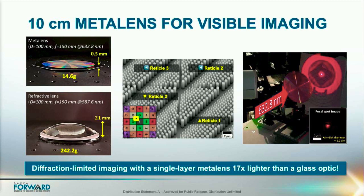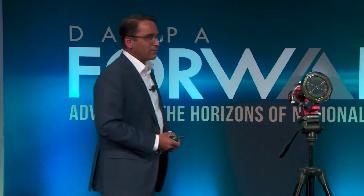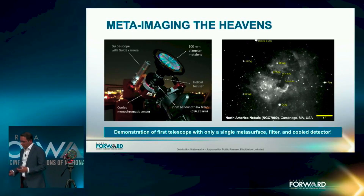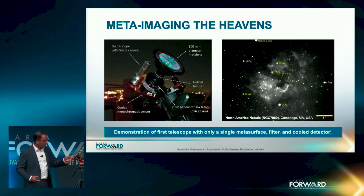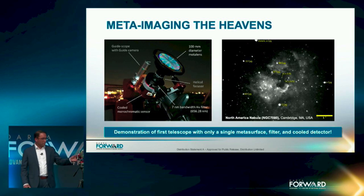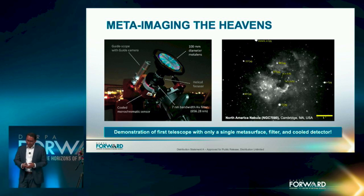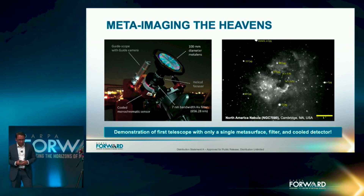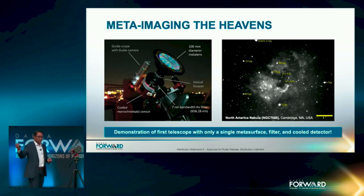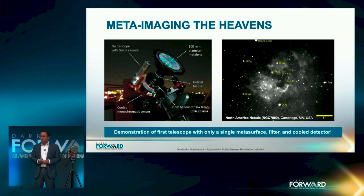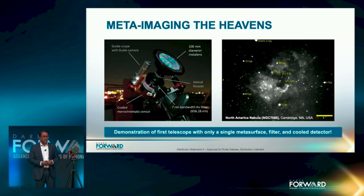The team took the next step and integrated this into the first meta-optic telescope. This telescope, as you see in front of you, uses only a single optic — the meta-lens itself. It includes a helical focuser, a monochromatic filter designed to match the meta-lens, and a cooled sensor in the back. They were able to run some pretty cool night tests imaging the North American nebula. My DARPA riser, Yoon Soo Park from Harvard University, has additional images that are even more fascinating — I recommend reaching out to him to learn more about how he pioneered this work and fabricated this lens.